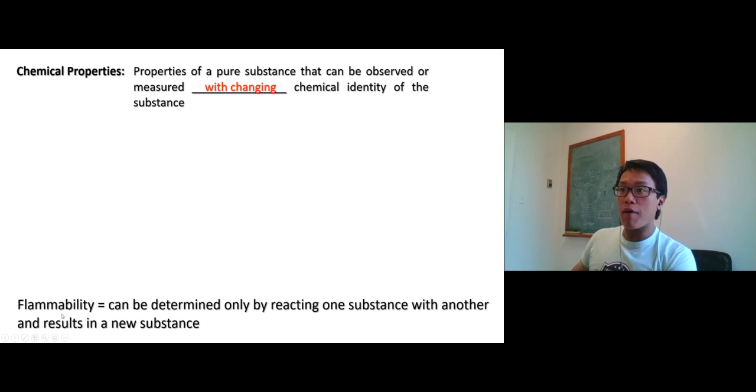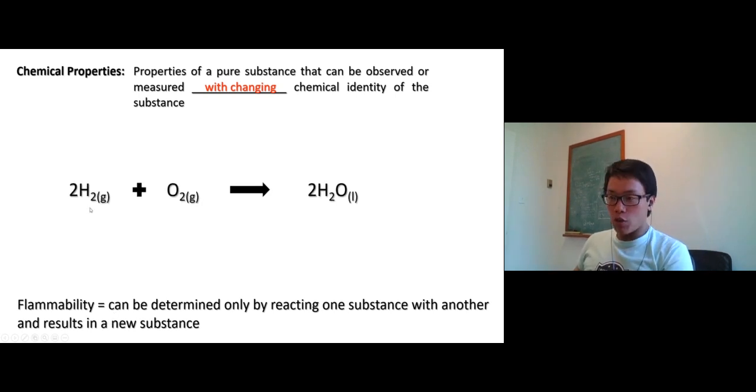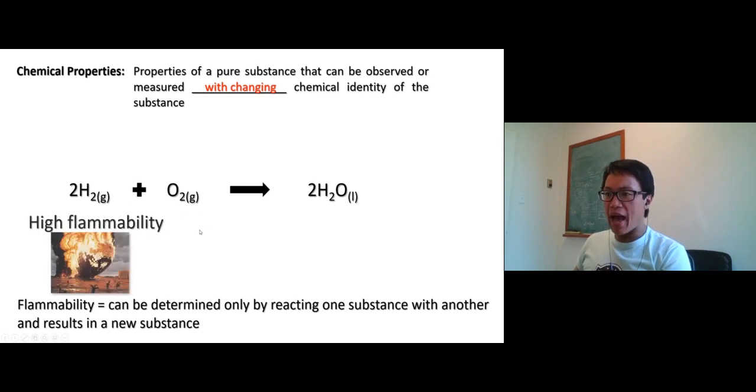Flammability is a type of chemical property. You can observe the flammability only when you burn things. For example, if you want to know if hydrogen gas is flammable or not, you burn it with oxygen gas. And we know that hydrogen gas is highly flammable.